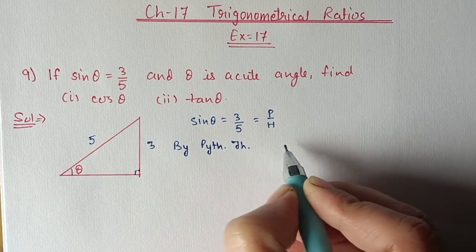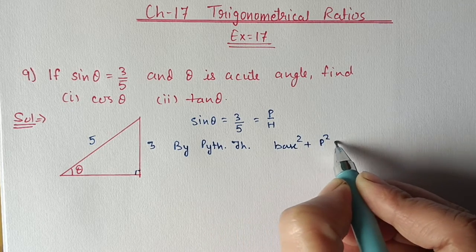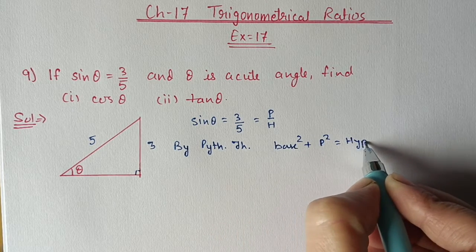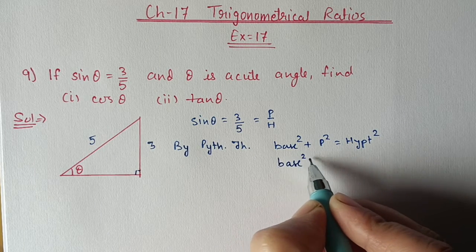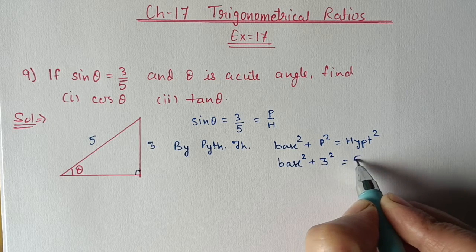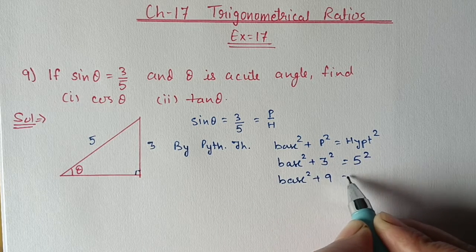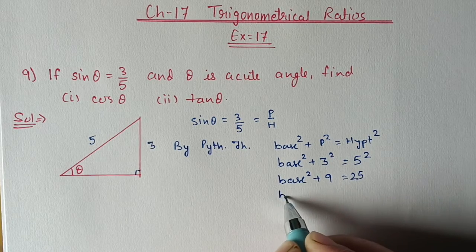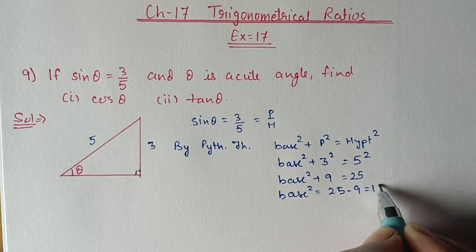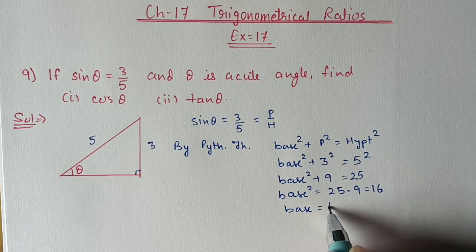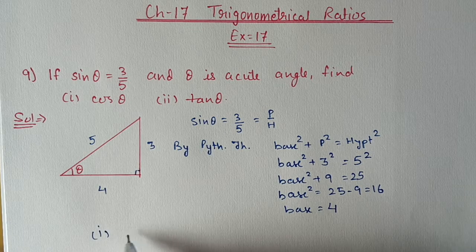By Pythagoras theorem: base square plus perpendicular square equals hypotenuse square. The base is what we have to find; perpendicular is 3 and hypotenuse is 5. So base square plus 9 equals 25, meaning base square equals 25 minus 9, which is 16. Therefore base equals 4.